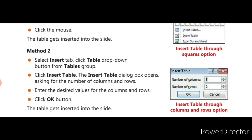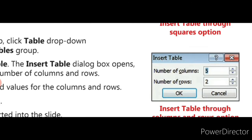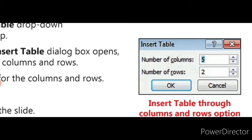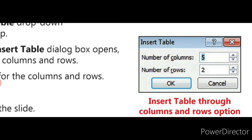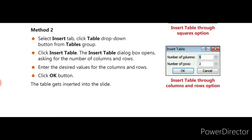After clicking the Insert tab and the Table drop-down button, the Insert Table dialog box will be displayed. Here you enter the number of columns and rows you need for your table. After entering the number of rows and columns, click OK and the table gets inserted into the slide. This is the second method.